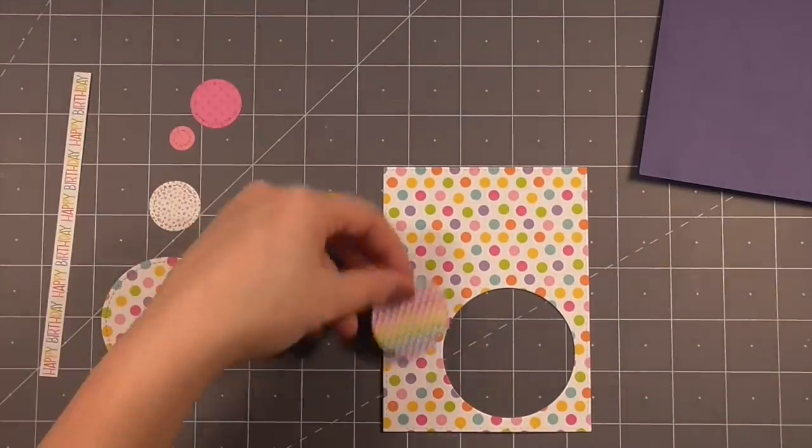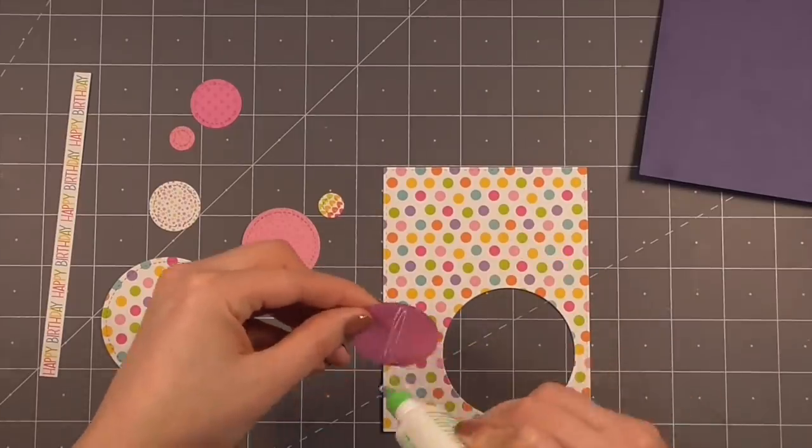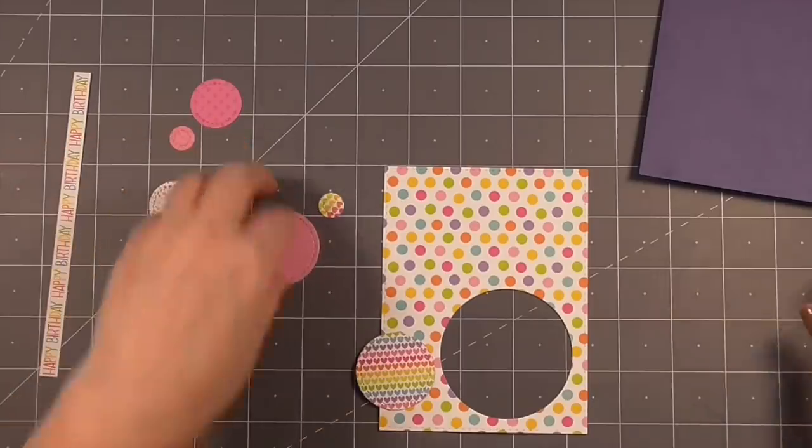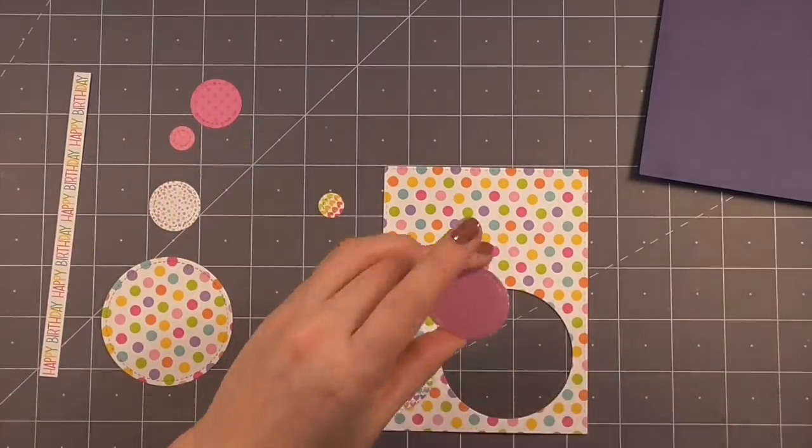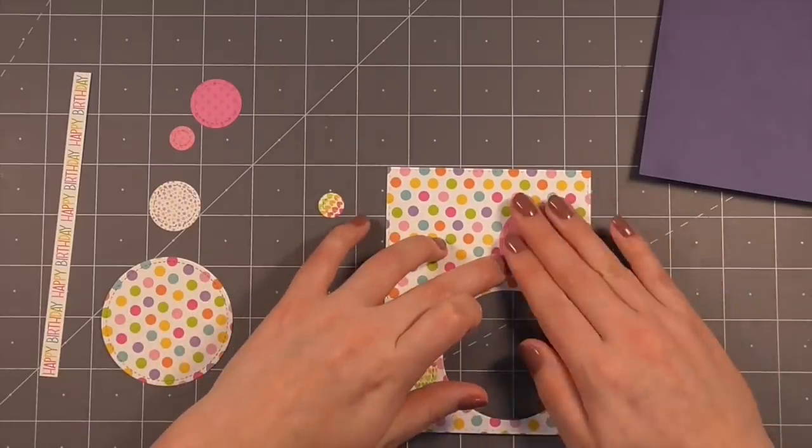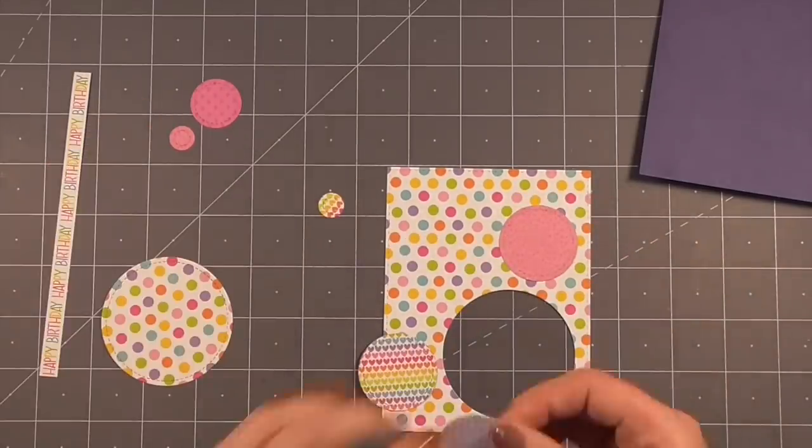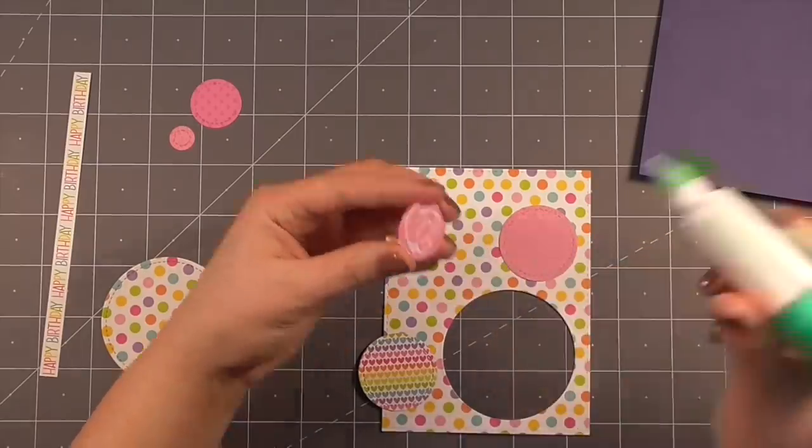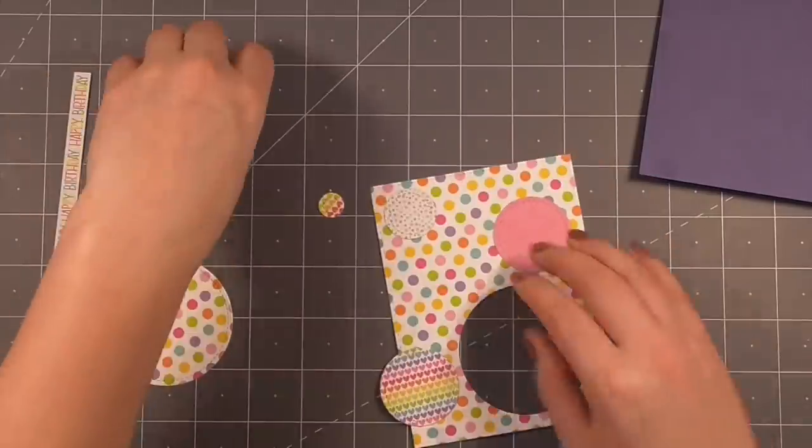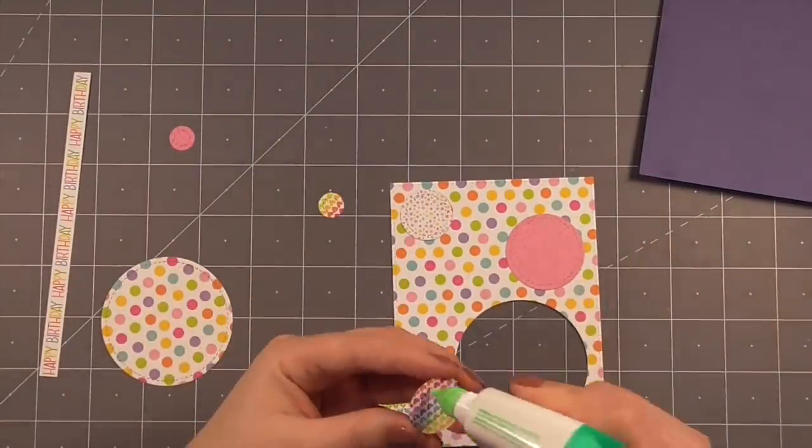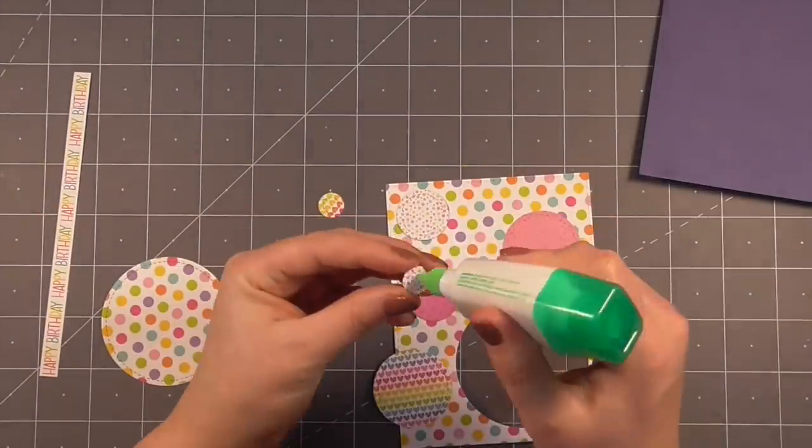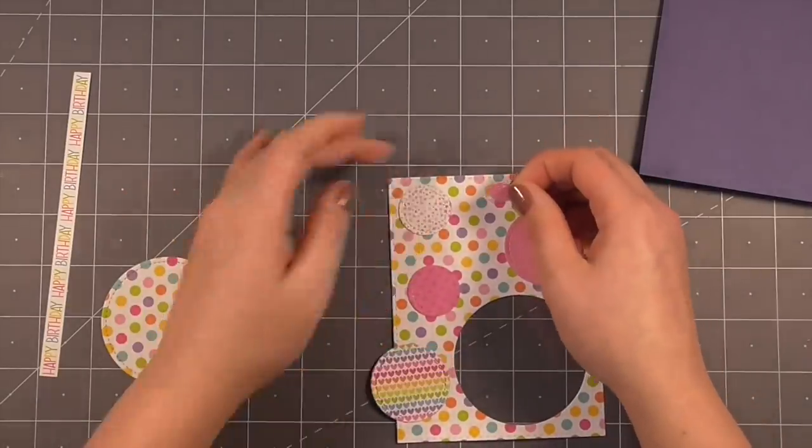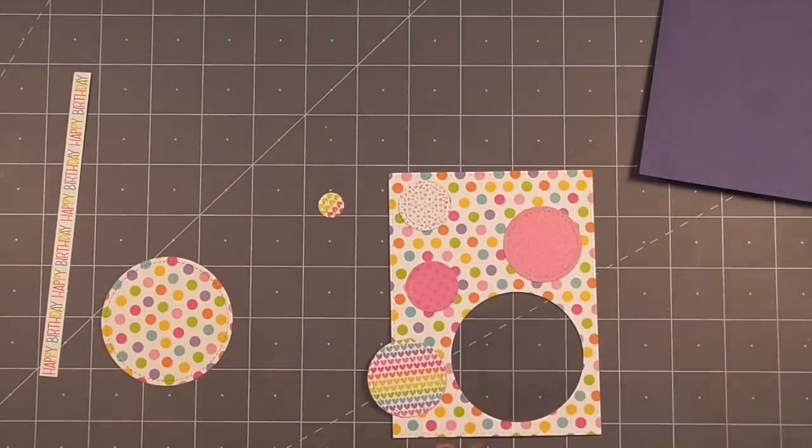I went ahead and die cut a bunch of circles using some Doodlebug patterned paper and I also cut a circle out of this front panel here. I'm going to go ahead and decorate that behind my circle window. I added some double-sided sticky tape and sealed that off with acetate so we'll have a nice clear section for our sequins to sit inside of the shaker.